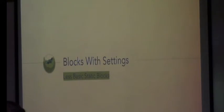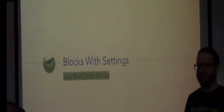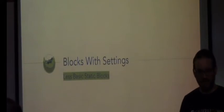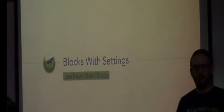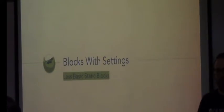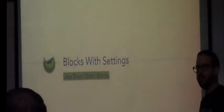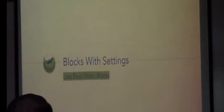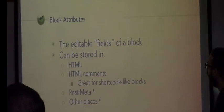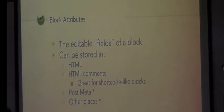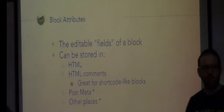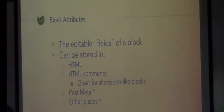That was a block — but it was a very fancy way of saving some HTML into post content that you couldn't make any changes to. I couldn't change it — it was just 'thanks for reading my post about Gutenberg, click here to learn more.' Well, where should I have them go? Shouldn't it be like 'thanks for reading my post about object-oriented PHP'? I need to have some settings to this thing. So we're going to make a less basic static block — this one has some settings — which means we need to save some data. We're now talking about block attributes: the editable fields of a block.